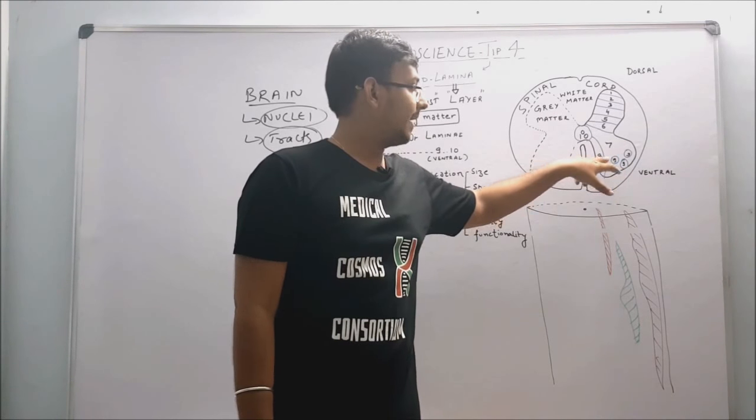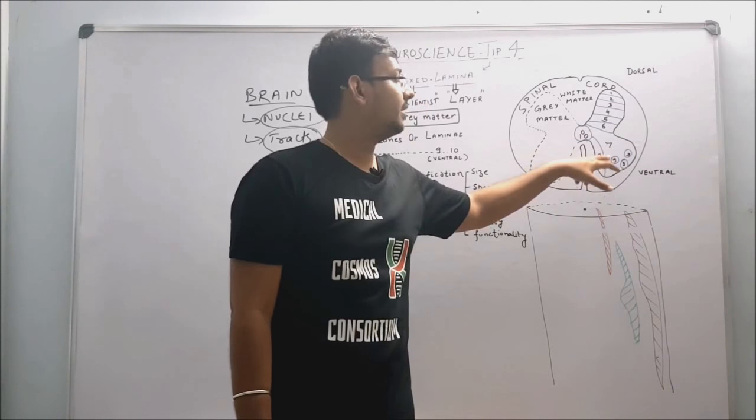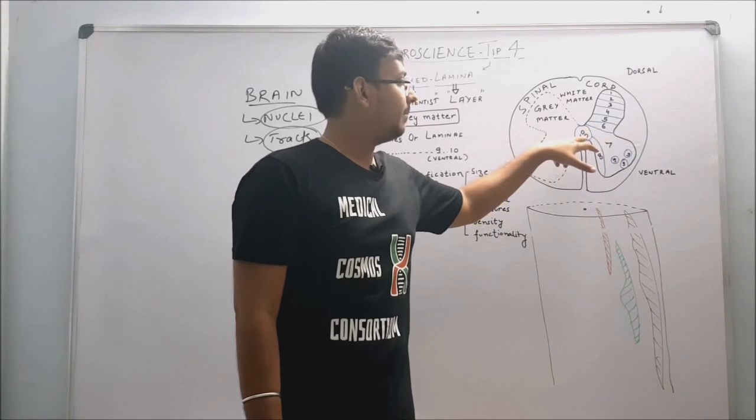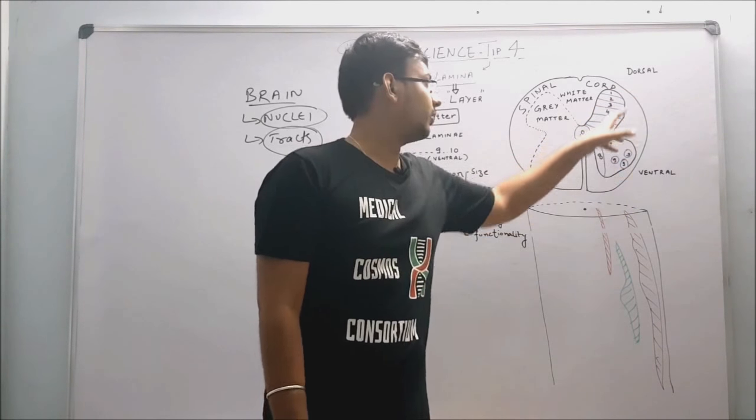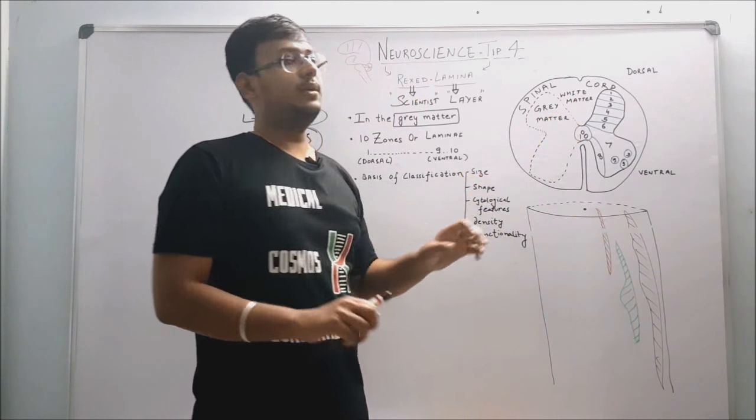And rest are in ventral position. You can also see by the diagram that ninth lamina is scattered in the seventh lamina, and tenth lamina is around the central canal. And one to five, you can clearly see, are present in dorsal position of the gray matter in the spinal cord.